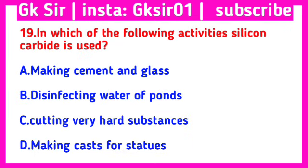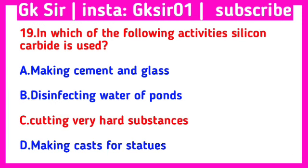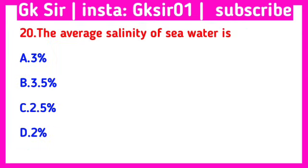Question number 19. In which of the following activities is silicon carbide used? Option A: making cement and glass, Option B: disinfecting water of ponds, Option C: cutting very hard substances, Option D: making casts for statues. The correct answer is Option C: cutting very hard substances.